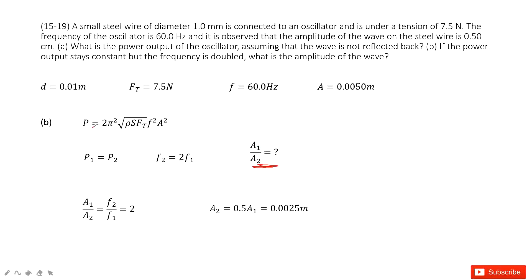Because P equals, we can see that P is proportional to f squared and A squared. So that makes A1 over A2 equal to F2 over F1.